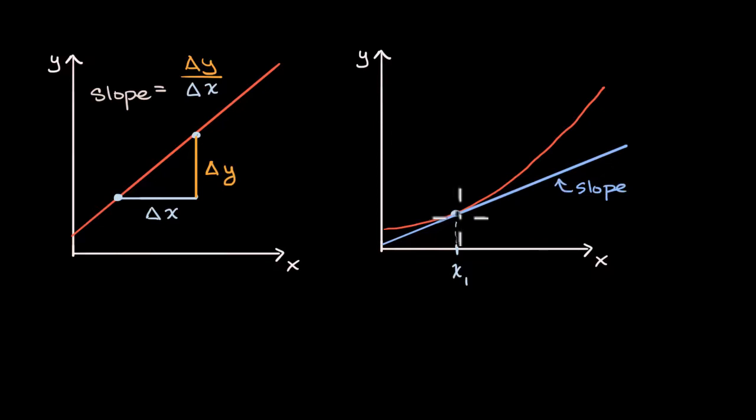Why do I say instantaneous rate of change? Well, think about the video on the sprinters, the Usain Bolt example. If we wanted to figure out the speed of Usain Bolt at a given instant, well maybe this describes his position with respect to time.